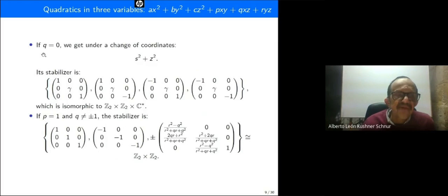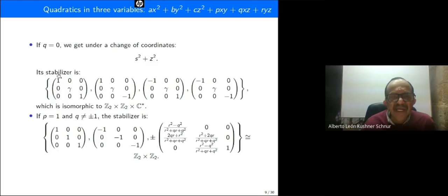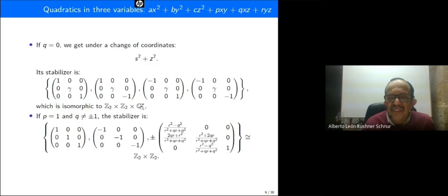In the case q equal to zero, under a change of coordinates we get x squared plus z squared, with only two pure squares. The stabilizer is isomorphic to Z2 × Z2 × C*, where C* comes from gamma which must be different from zero.